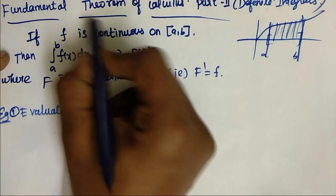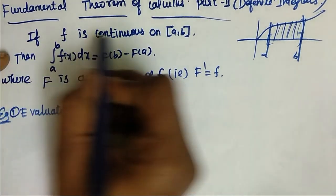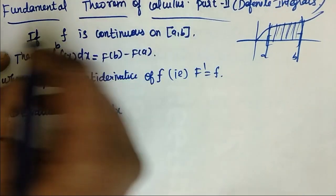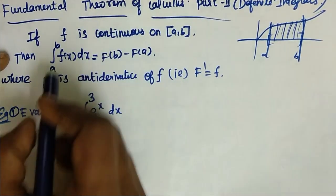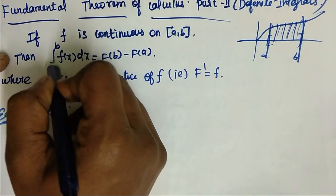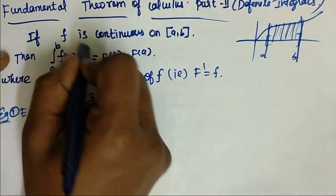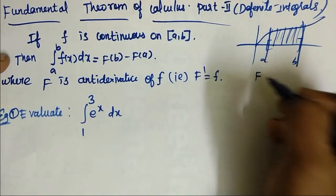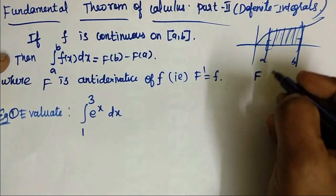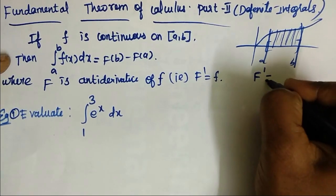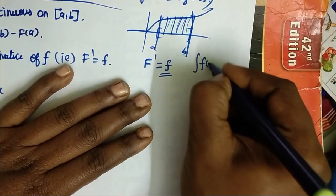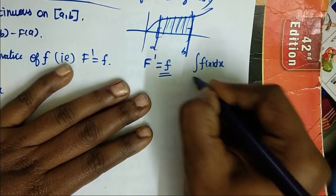Fundamental Theorem of Calculus: if f is continuous on [A, B], in this interval, continuous, then from a to b, integrate the function. F is another function. Differentiate the function — if f is small, that is the integration value. That is, integral of f of x dx from A to B.